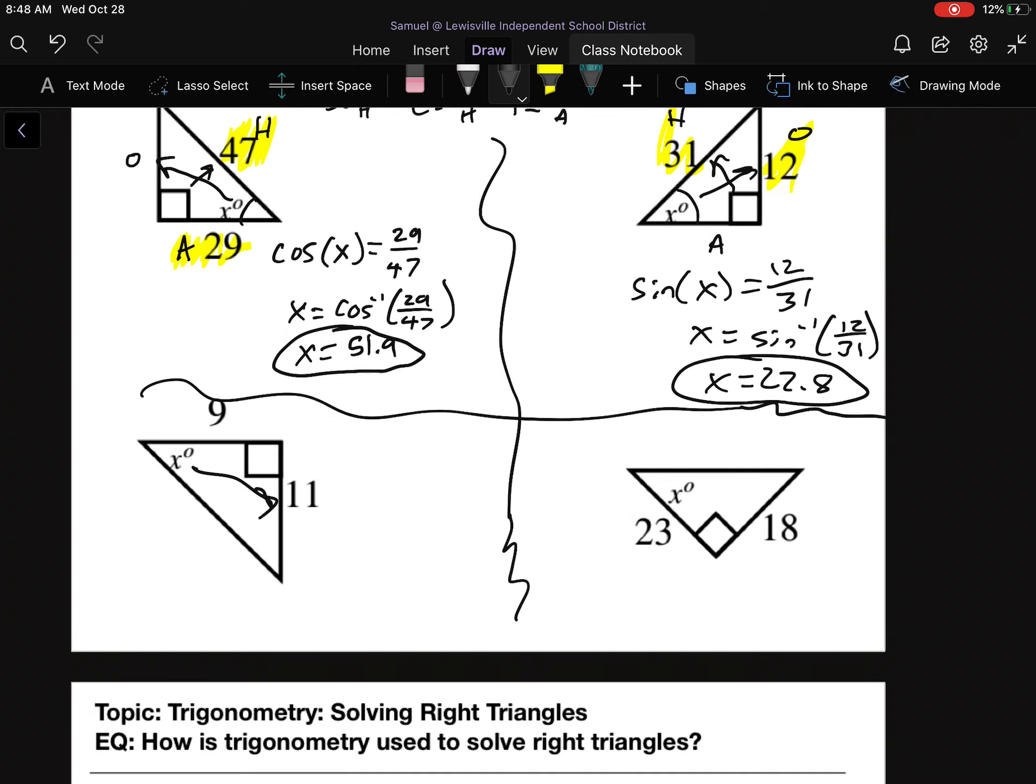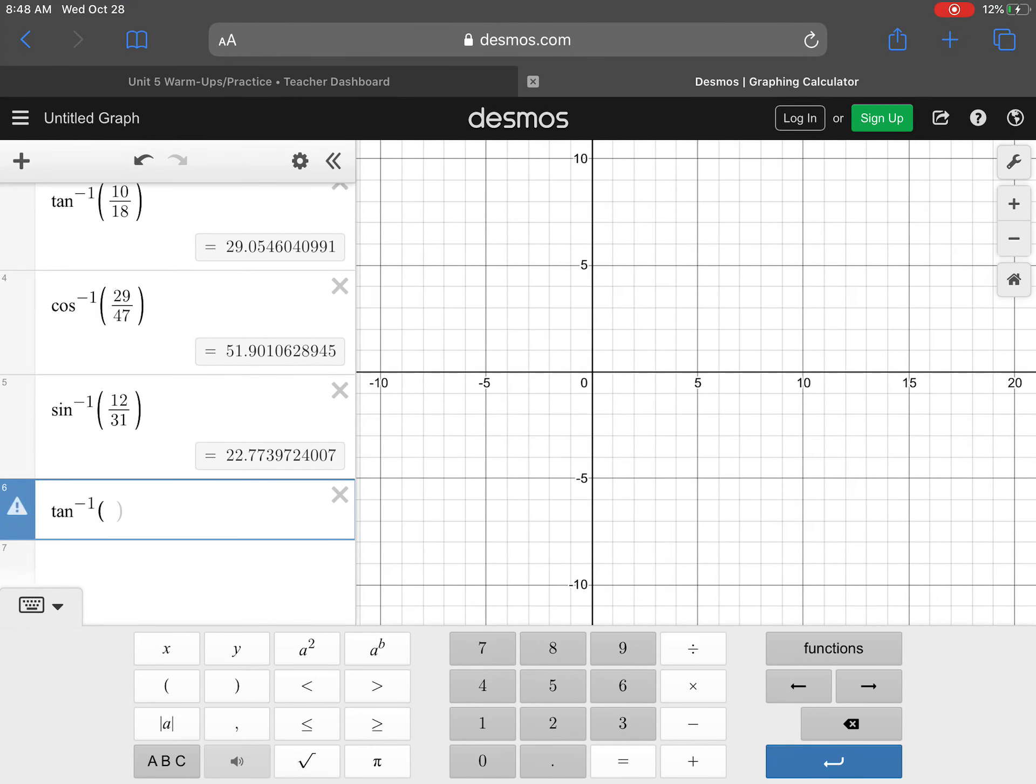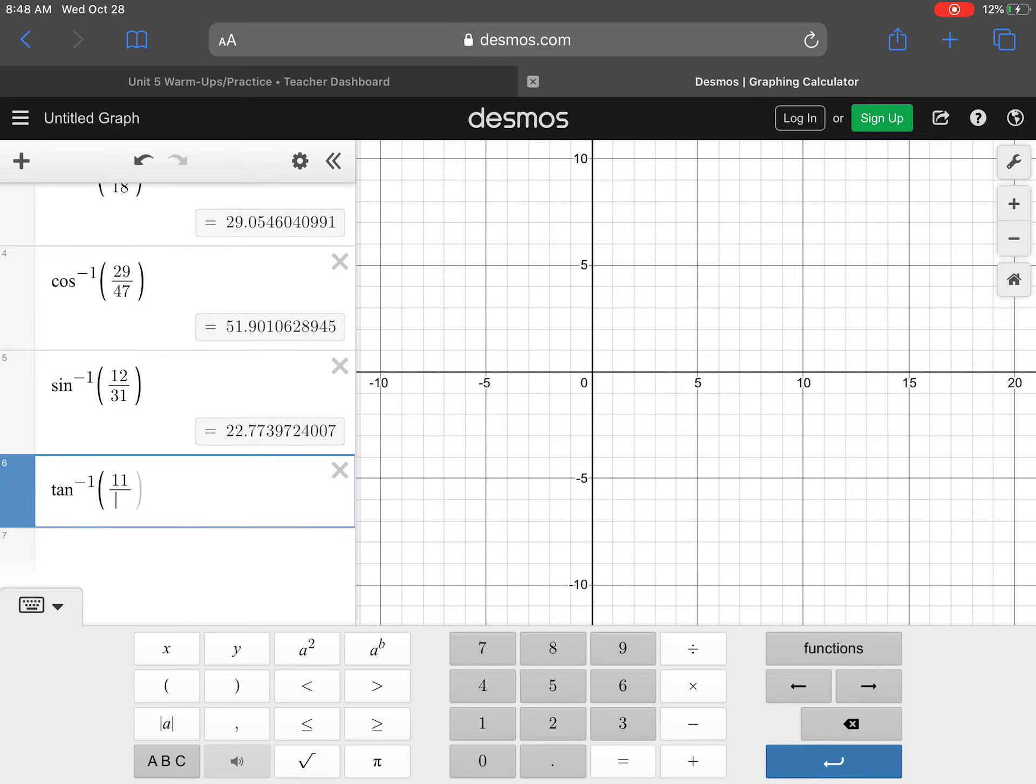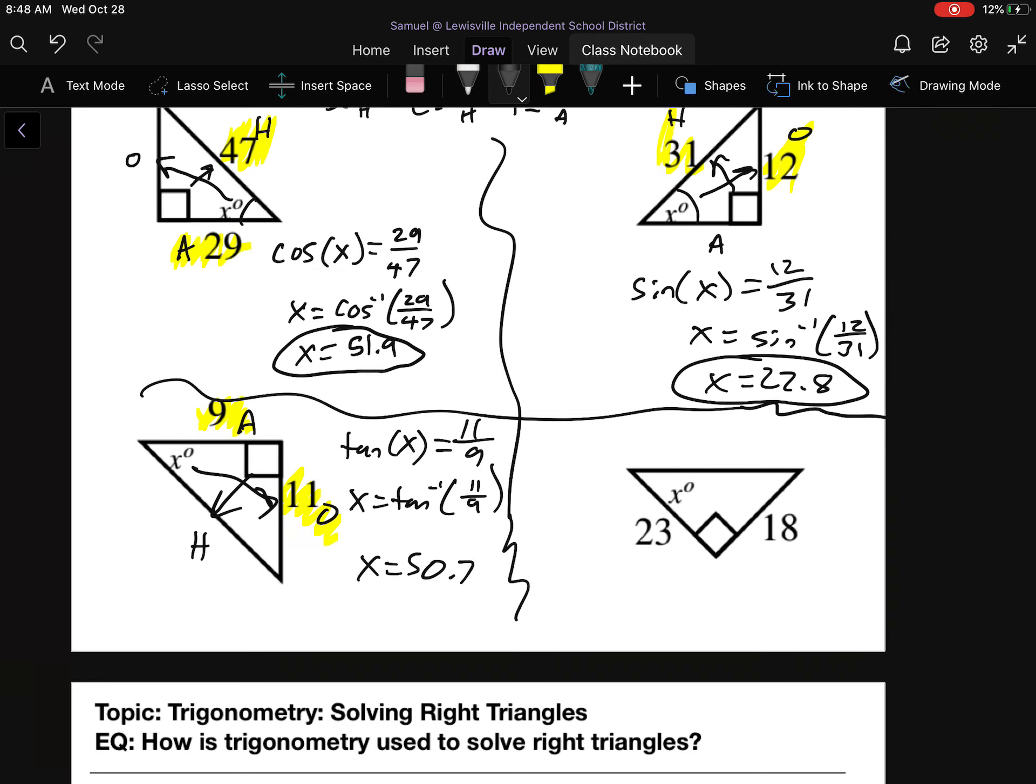For our next one here, draw the arrow. That's the O. Draw the arrow. That's the H. Last side is the A. So what do we have here? We've got an A and an O. A and O is tangent. So our equation should have been tangent of X is equal to 11 over 9 because we want O over A for tangent. So that means that X should be inverse tangent of 11 over 9. Inverse tangent 11 over 9 gives me 50.7. X is 50.7.